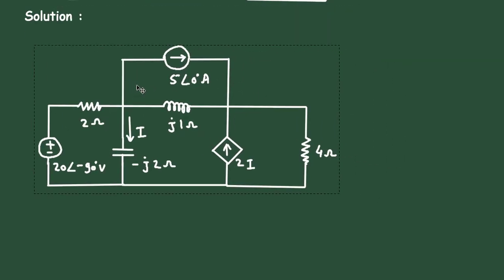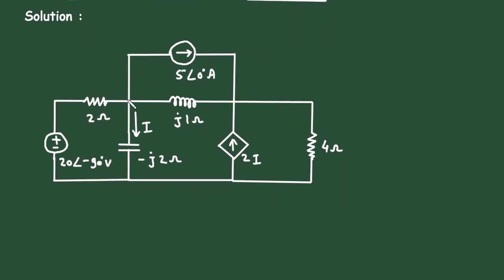Now let us see the solution. Let us assume this as node V1 and this as node V2. And let us assume this is the reference node. Let us assume this current is I1, this current is I, this current is I2, this current is 5 ampere, and this current is I3. We are assuming all the currents towards this reference node.